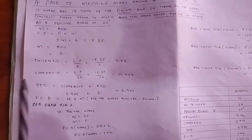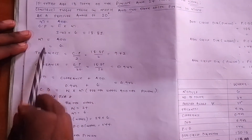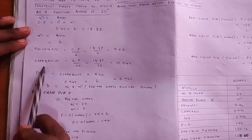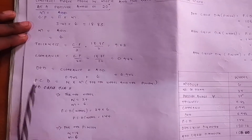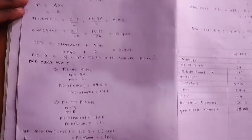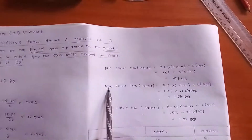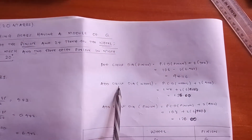Now the very first thing when you are given such a question, you look for the CP, the module, the thickness, the clearance, the dedendum, the PCD, the dedendum circle diameter and the addendum circle diameter.